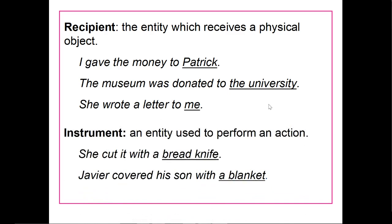An instrument is another role — an entity that's used to perform an action. In English, this is typically an oblique. She cut it with a bread knife: the bread knife was used to perform the action; it didn't receive anything or undergo a change of state. Javier covered his son with a blanket — the blanket is what covered his son, but it didn't perform any action on its own. Javier used it to perform the action, but the blanket wasn't the one acting.